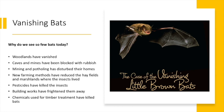Vanishing bats. Why do we see so few bats today? Woodlands have vanished. Caves and mines have been blocked with rubbish. Mining and potholing has disturbed their homes. New farming methods have reduced the hay fields and marshlands where the insects lived. Pesticides have killed the insects. Building works have frightened them away. And chemicals used for timber treatment have killed bats.